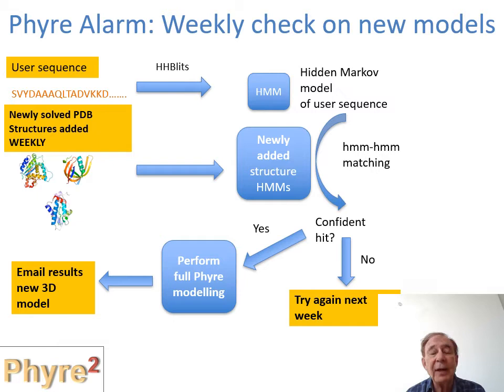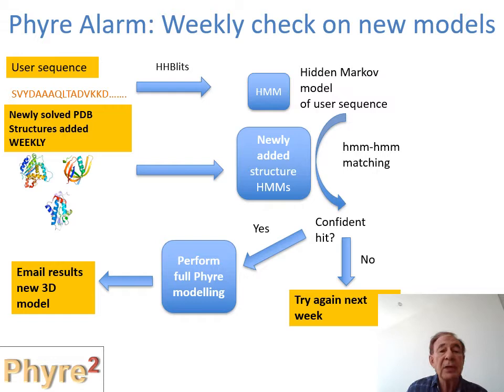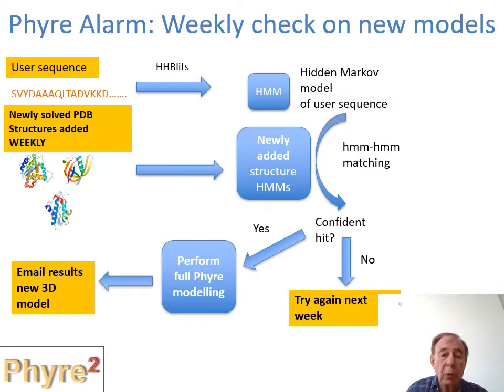PHIRE Alarm is designed for when you've run PHIRE, no homologue is found, and that's the end. But proteins are continually being updated in the protein data bank and next week there could be a superb template on which we can build a model. We realize that people are not going to check every Monday morning which sequence to rerun through PHIRE, so we do this automatically. We update weekly with newly solved PDB structures and go through the standard PHIRE procedure. If we find a confident hit we automatically email you a model, and if not we try again next week. On the PHIRE portal you can set up these PHIRE Alarm searches to run for you automatically.